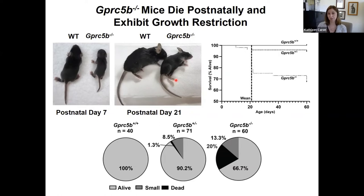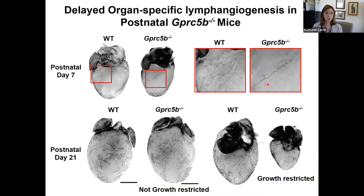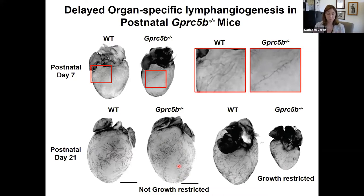Looking at the heart, the lymphatics of the myocardium develop postnatally. In wild-type animals, a beautiful branching pattern emanates just under the atria on top of the myocardium. In GPRC5b null animals, there is a marked deficit in branching and surface coverage of cardiac lymphatics in growth-restricted animals. However, animals that did not have growth restriction appear to have normal development of cardiac lymphatics, perhaps enabling them to survive — about 80% of mice survive into old age.